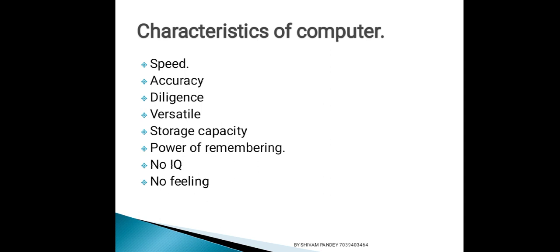Computer की characteristics क्या होती हैं? Computer एक high speed device है — यानि computer कोई भी काम बहुत तेजी से करता है। Computer accuracy के साथ काम करता है — जो भी आप input दे रहे हैं उसके according वो calculate करके आपके सामने दे देगा। Computer बहुत diligent device है — यानि वो थकता नहीं है। आप 2 घंटा, 4 घंटा, 10 घंटा, 20 घंटा computer पर करें, computer नहीं थकेगा — आप थक जाओगे।